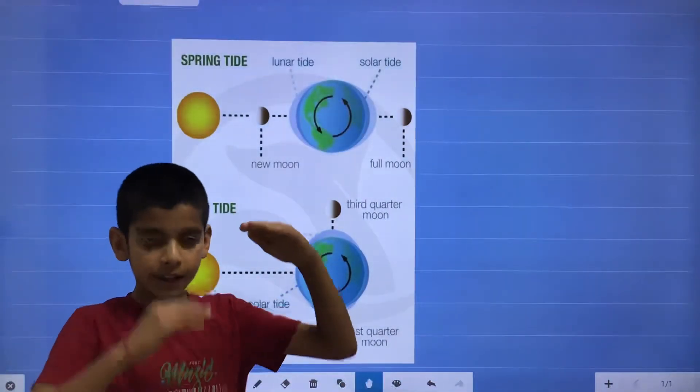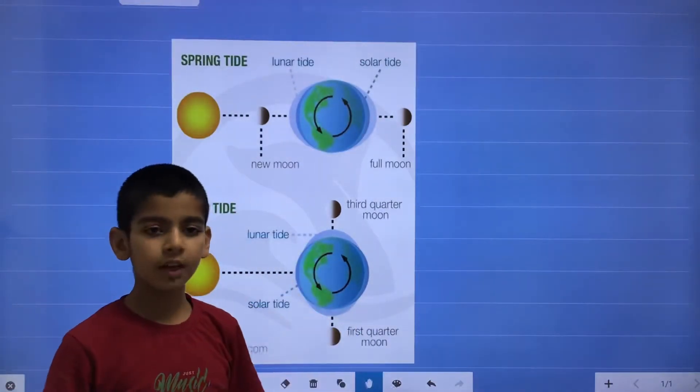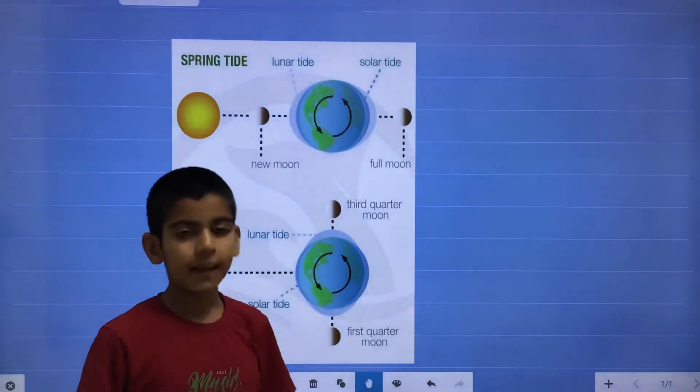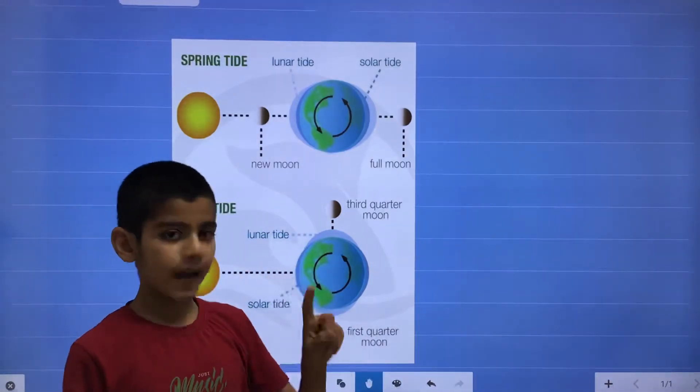Now, we will talk about the tide. The increasing and the decreasing in the water level twice in a day is known as tide. And there are two types of tides, spring tide and neap tide.